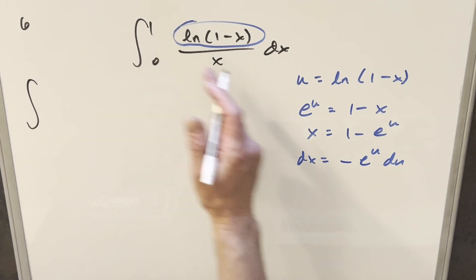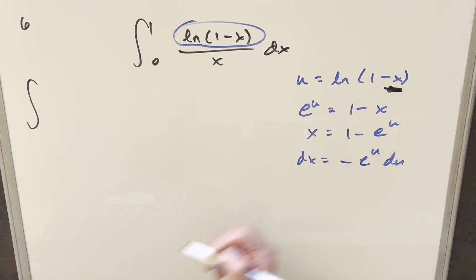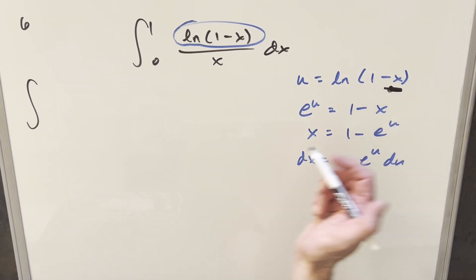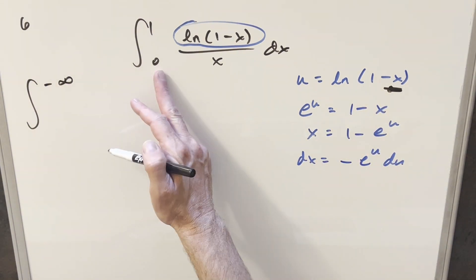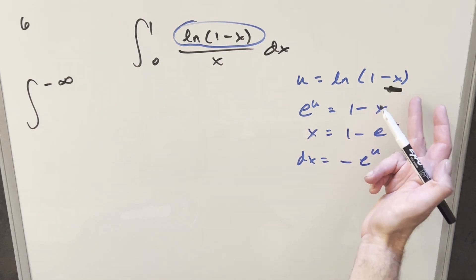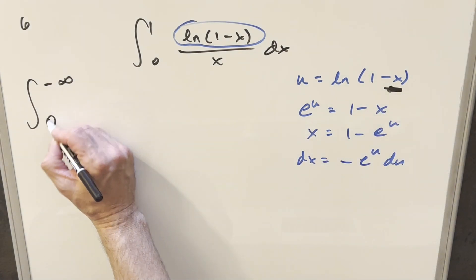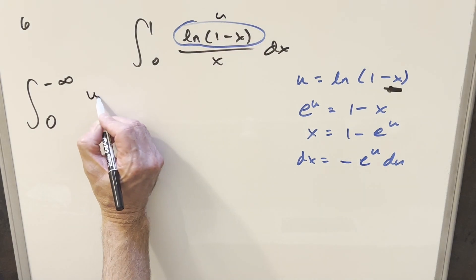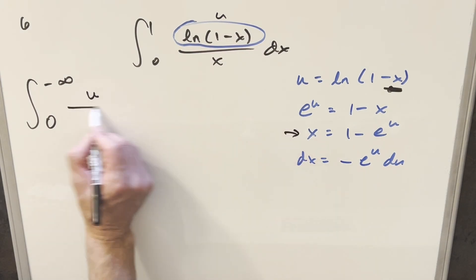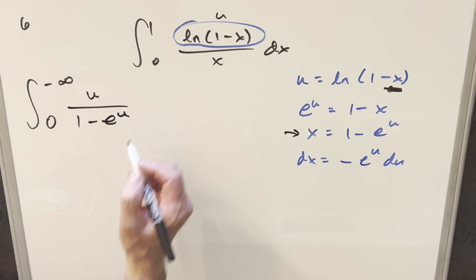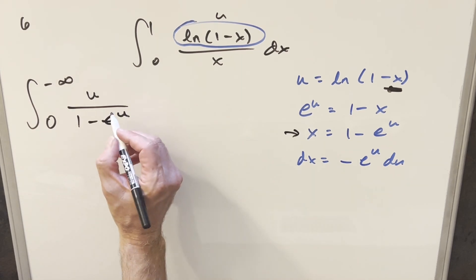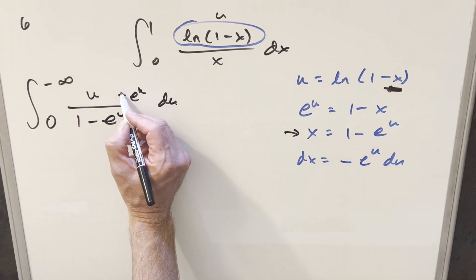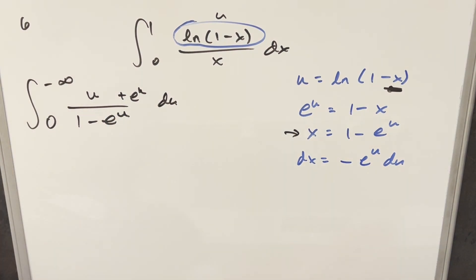Now substituting and updating everything: plugging in x equals 1 gives natural log of zero, which is minus infinity. Plugging in x equals 0 gives natural log of 1, which is zero for the lower bound. Rewriting, the numerator becomes u, x becomes 1 minus e to the u, so we have u over (1 minus e to the u), and dx becomes minus e to the u du. We take the minus sign out front and swap the bounds around.